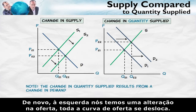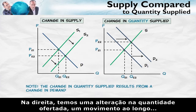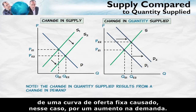Again, on the left, we have a change in supply — the entire supply curve shifts. On the right, we have a change in the quantity supplied: a movement along a fixed supply curve caused, in this case, by an increase in demand.